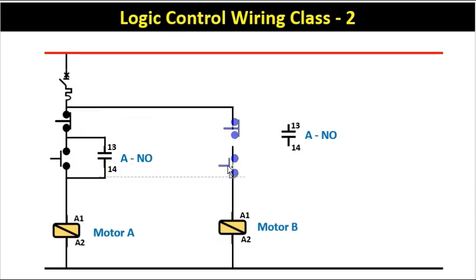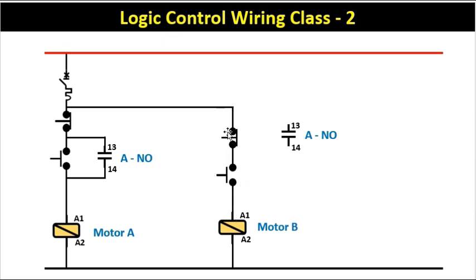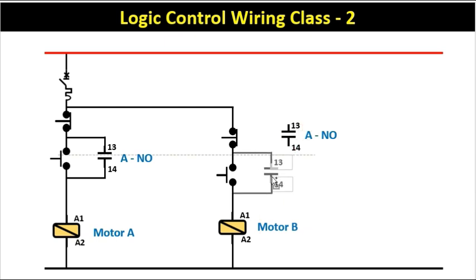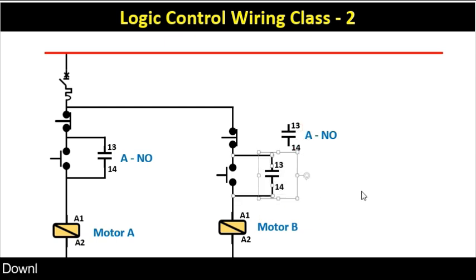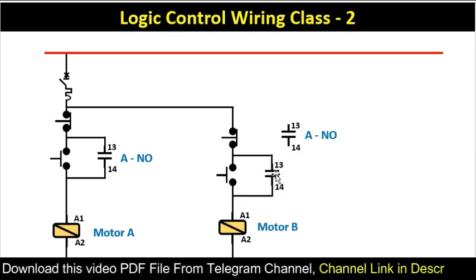Here I used one stop push button and one start push button. Through the stop push button we will turn off the motor, and through the start push button we will turn on the motor. We also need to hold this contactor, so we will make a holding circuit. The holding circuit is added, meaning the circuit to turn on and off motor B is now completed.